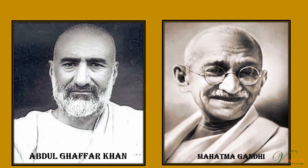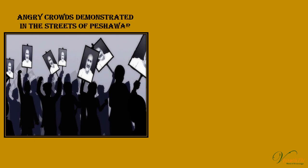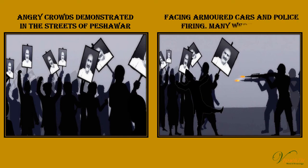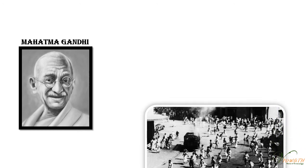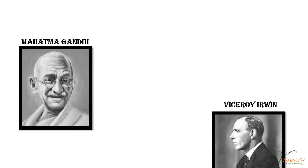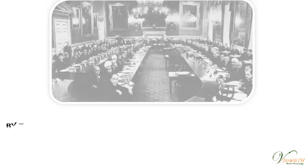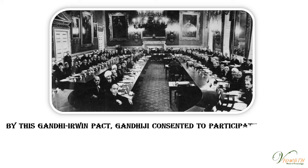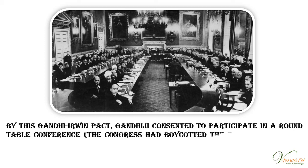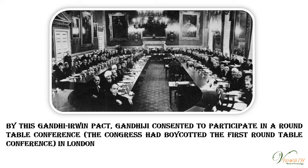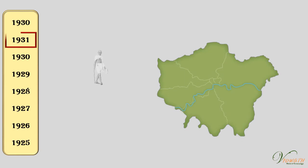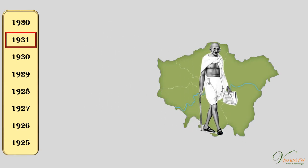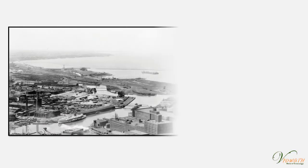When Abdul Ghafar Khan, a devout disciple of Mahatma Gandhi, was arrested in April 1930, angry crowds demonstrated in the streets of Peshawar, facing armoured cars and police firing; many were killed. Mahatma Gandhi once again decided to call off the movement and entered into a pact with Irwin on 5th March 1931. By the Gandhi-Irwin Pact, Gandhiji consented to participate in a roundtable conference, while the government agreed to release political prisoners. In December 1931, Gandhiji went to London for the conference, but negotiations broke down and he returned disappointed.